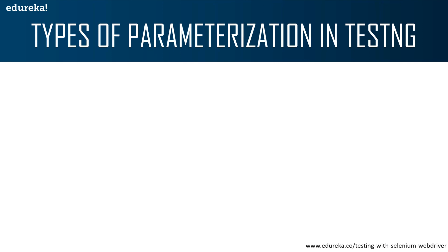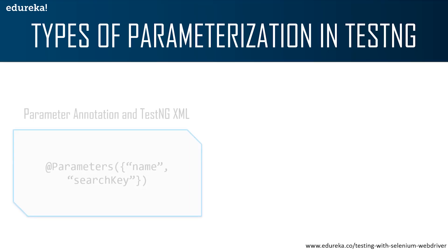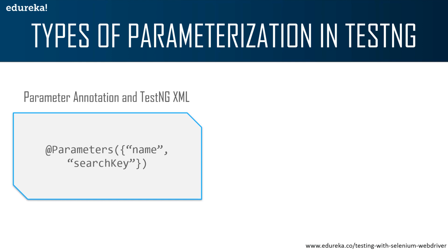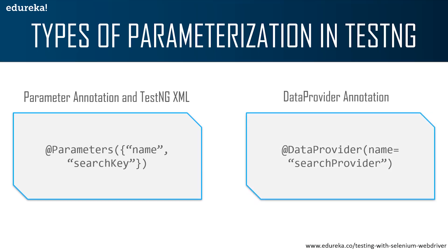There are two ways by which we can achieve parameterization in TestNG. First, with the help of the parameter annotation and TestNG XML file — you use the @Parameters annotation and provide the name and the search key. The second one is with the data provider annotation, where instead of parameter annotation you use the @DataProvider annotation and search for the given provider. In this session, I will be discussing data provider annotation in TestNG.